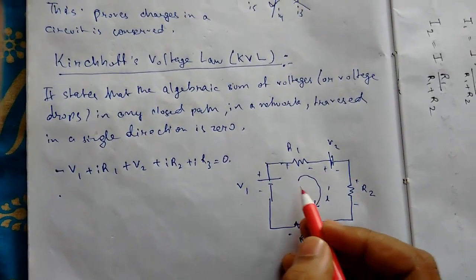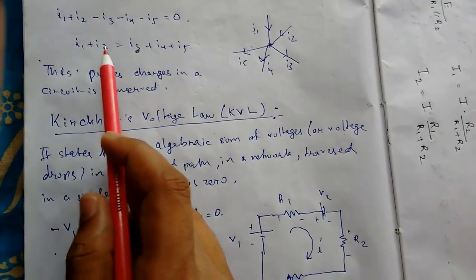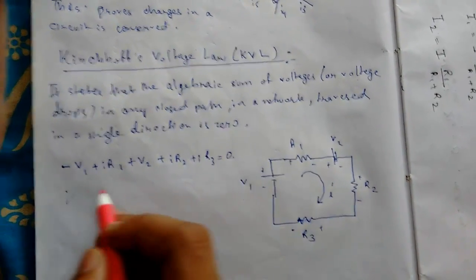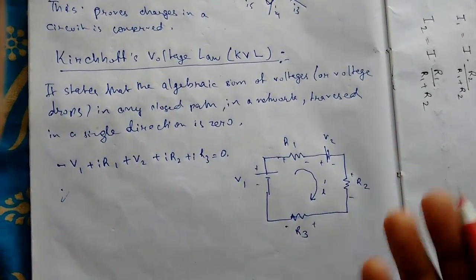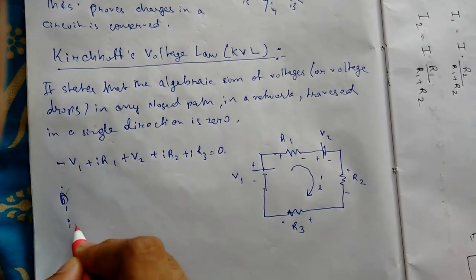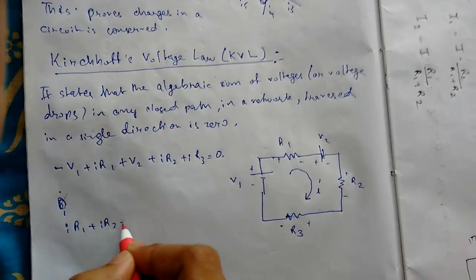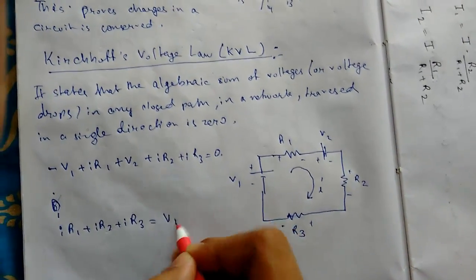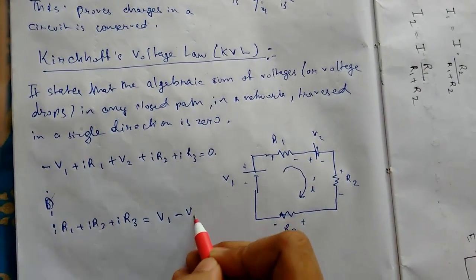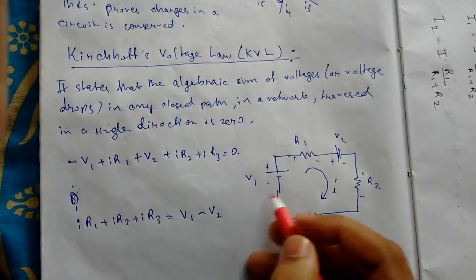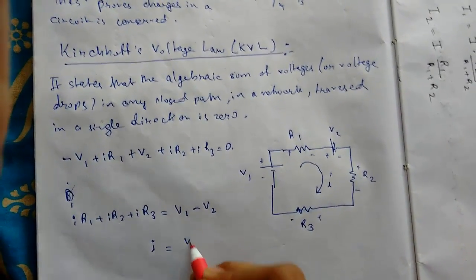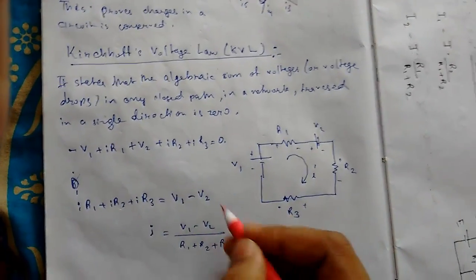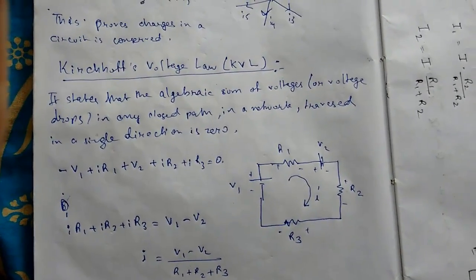To write it easily, sources that consume power go on one side and sources that give power go on the other. So: IR1 + IR2 + IR3 = V1 − V2, since V1 is in the assumed current direction and V2 is in the opposite direction. From this, I = (V1 − V2) / (R1 + R2 + R3). This is how you apply KVL to find current.